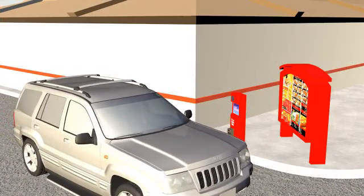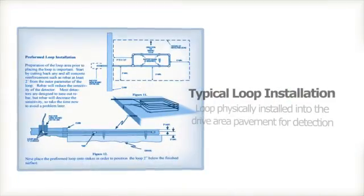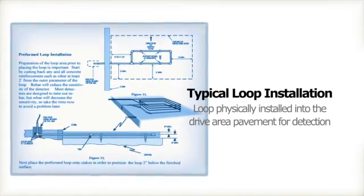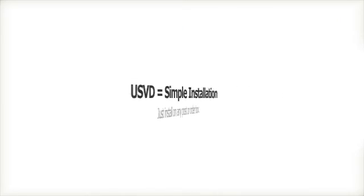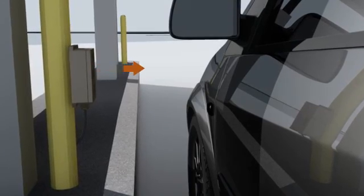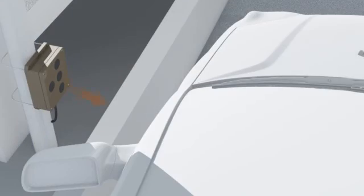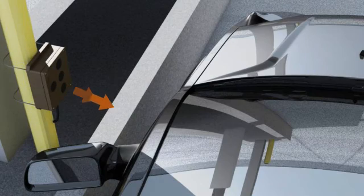Unlike a vehicle loop detector that requires the installation of a loop in the pavement, the USVD may be simply mounted on a post or order box and aimed at the location of the vehicle when in position to perform a transaction or place an order.